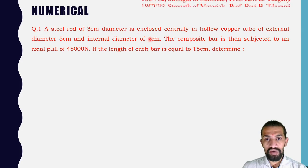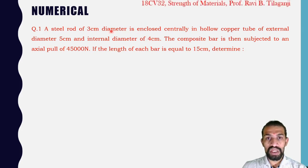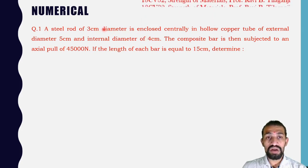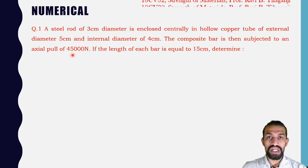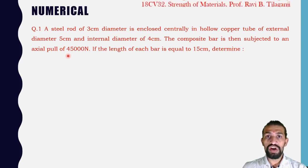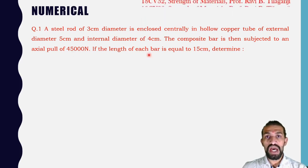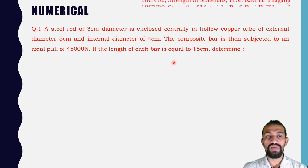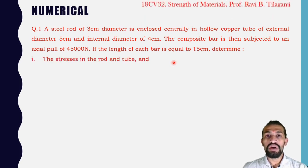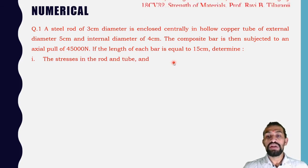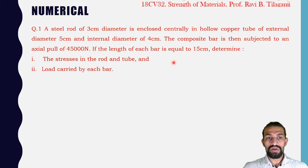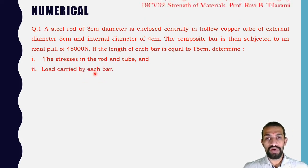There is a 1 centimeter gap remaining between the steel rod and hollow copper tube sections. The composite bar is subjected to an axial pull of 45,000 Newton. We need to determine the stress in the rod and tube, and the load carried by each bar.